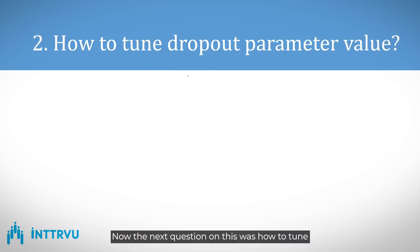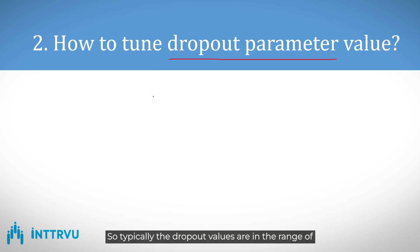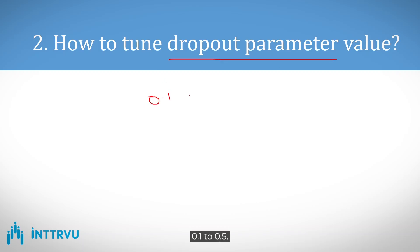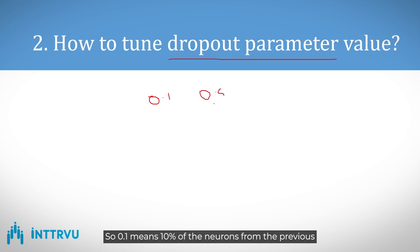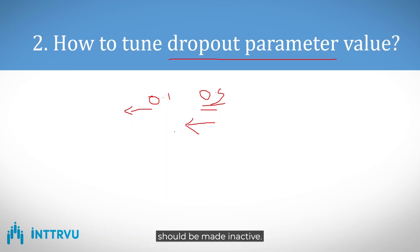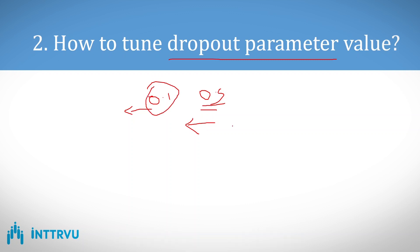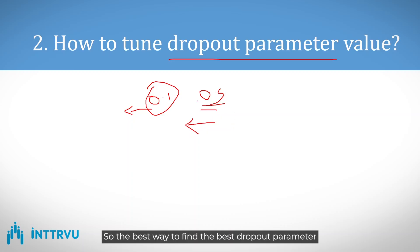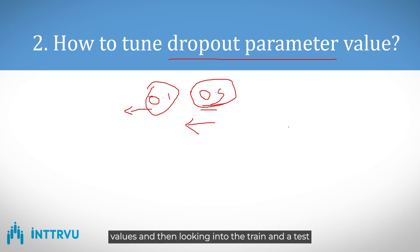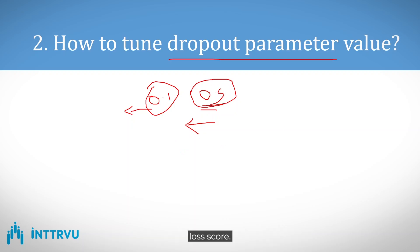The next question was how to tune the dropout parameter. Typically, dropout values are in the range of 0.1 to 0.5. A value of 0.1 means 10% of neurons from the previous layer are made inactive; 0.5 means 50%. Whether to choose 0.1, 0.2, 0.3, or 0.5 depends on the kind of data you have. The best way is to try different dropout values and look at the training and test loss scores.